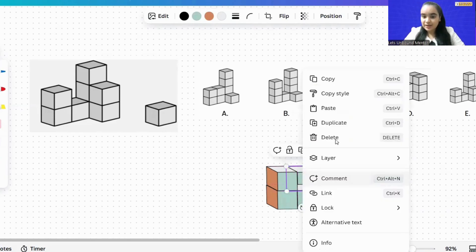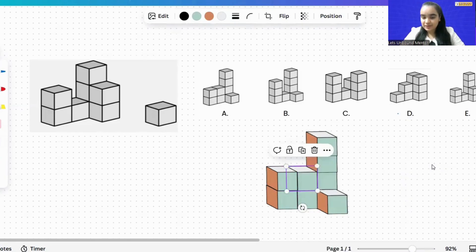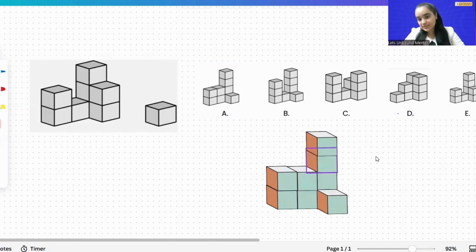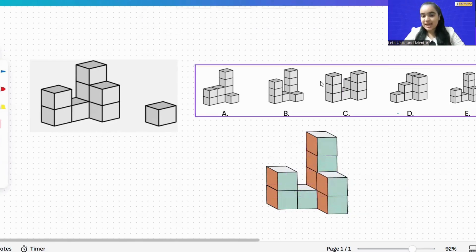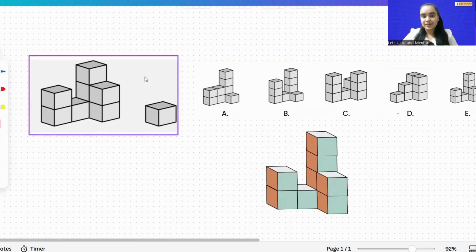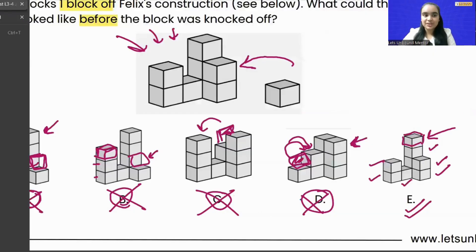So they have moved two of the blocks, and we cannot do that. In the same way, in the rest of the options as well, as we discussed, they have moved two blocks - the one the cat knocked off and one other one. That's why we got our correct option, which is option E.